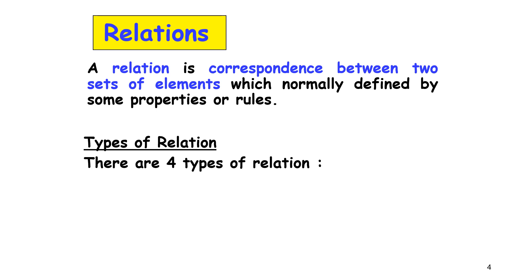Type of relation. There are four types of relation. First one, one-to-many. Second, many-to-one. Third, many-to-many. The last one, many-to-one.